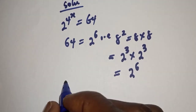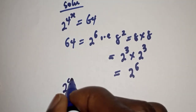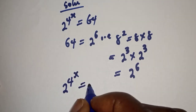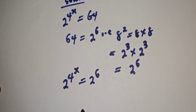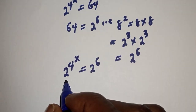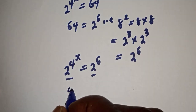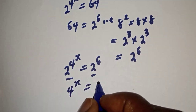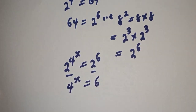Therefore, we have 2 raised to power 4 raised to power s is equal to 2 raised to power 6. Now we have the same base 2, so 4 raised to power s is equal to 6.